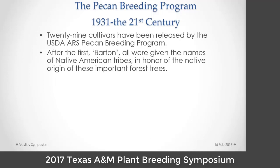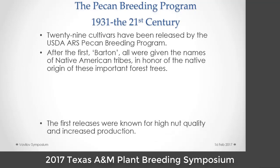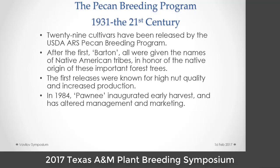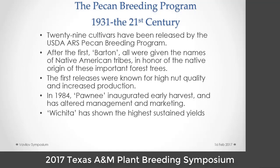There have been 29 cultivars released in the USDA pecan breeding program. The first was named Barton. After that, they've all been given the names of American Indian tribes in honor of the stewards of the forest. The first releases were known for high nut quality, increased production, prolificacy, and precocity, but they alternate bear horribly and many were very disease susceptible. In 1984, Tommy Thompson released Pawnee, inaugurating early nut maturation and early harvest, which altered management, gave a premium for the market, and contributed to the Chinese market's interest in our crop.